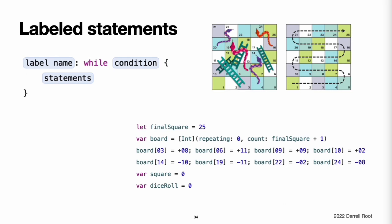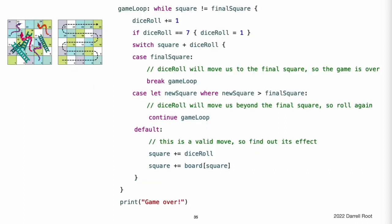A labeled statement is indicated by placing a label on the same line as the statement's introducer keyword, followed by a colon. The following example uses break and continue statements with a labeled while loop for an adapted version of the snakes and ladders game. This time, the game has an extra rule: to win, you must land exactly on square 25. If a particular dice roll would take you beyond square 25, you must roll again until you roll the exact number needed. The while loop has a statement label called gameLoop to indicate that it is the main game loop, and its condition is while square != finalSquare, reflecting that you must land exactly on square 25.